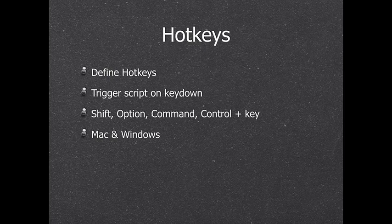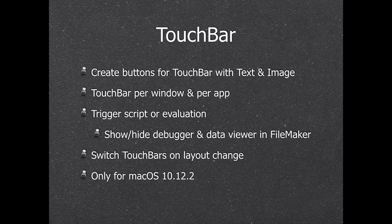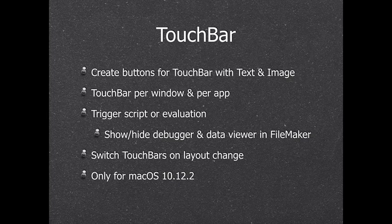We can also do remote control — move the mouse by script or press keys — to bring another application to the front or do certain clicks to automate things. We also support the touch bar on new Macs. You can define touch bar commands and use them in FileMaker — for example, creating buttons for showing or hiding the debugger or data viewer. You can use it on your solutions to quickly navigate and have a custom touch bar for each layout that switches whenever you change layouts. It's only available on the latest macOS version.